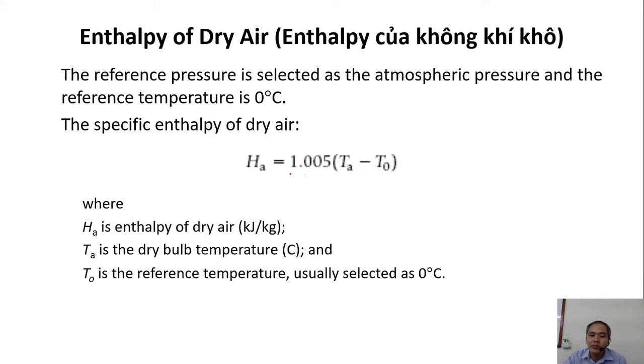This is the specific heat of air - now we talk about dry air first - multiplied by the difference in temperature that we want to change. Normally the reference temperature is zero degrees C. For example, if we want to calculate the enthalpy of current air at 27 degrees C, then we take 27 minus zero times the specific heat, and we will have enthalpy.